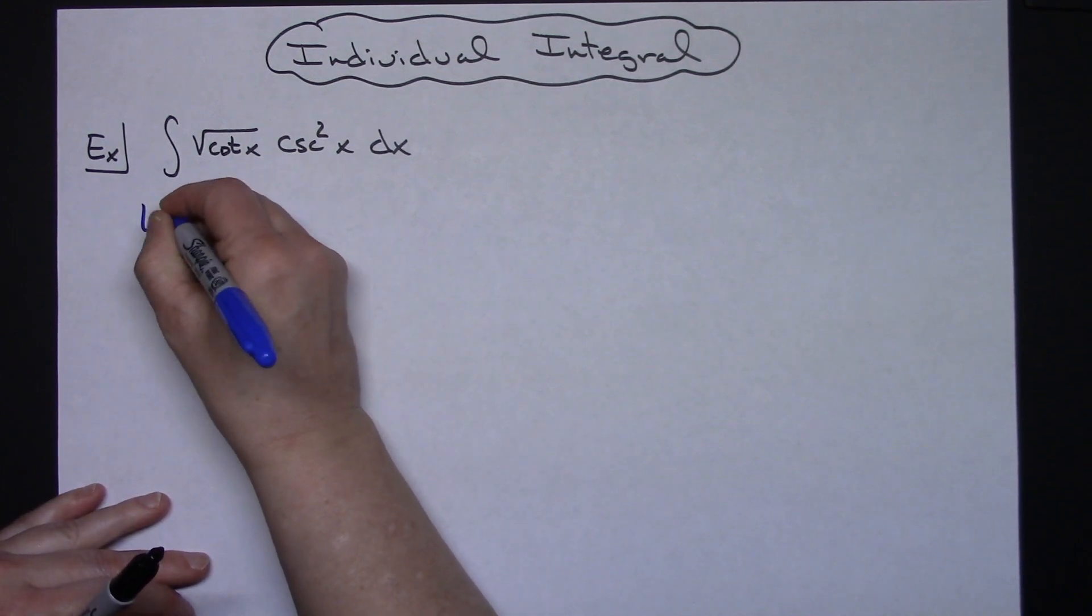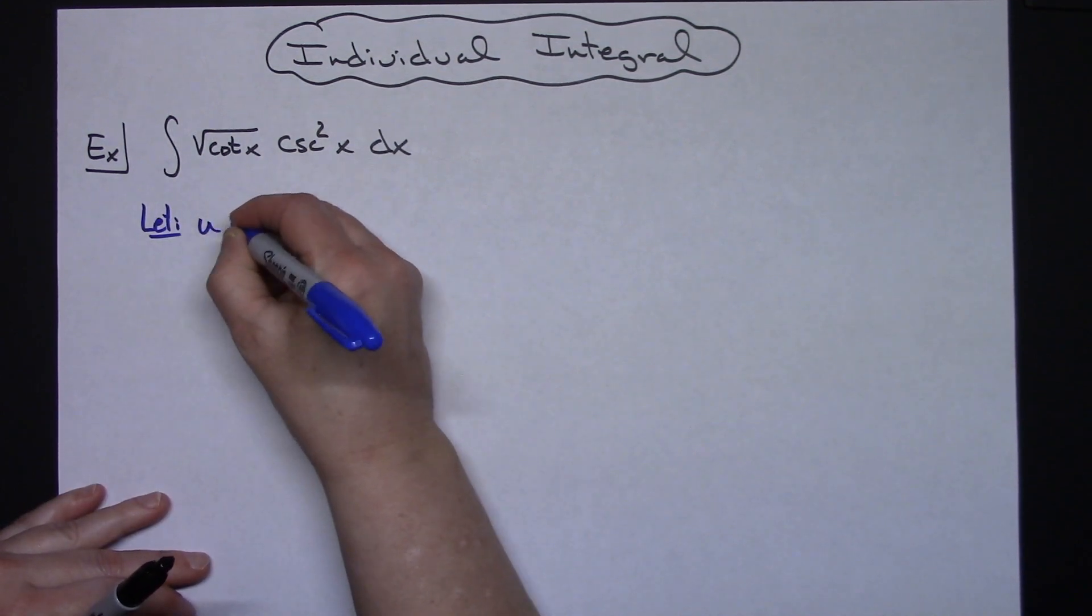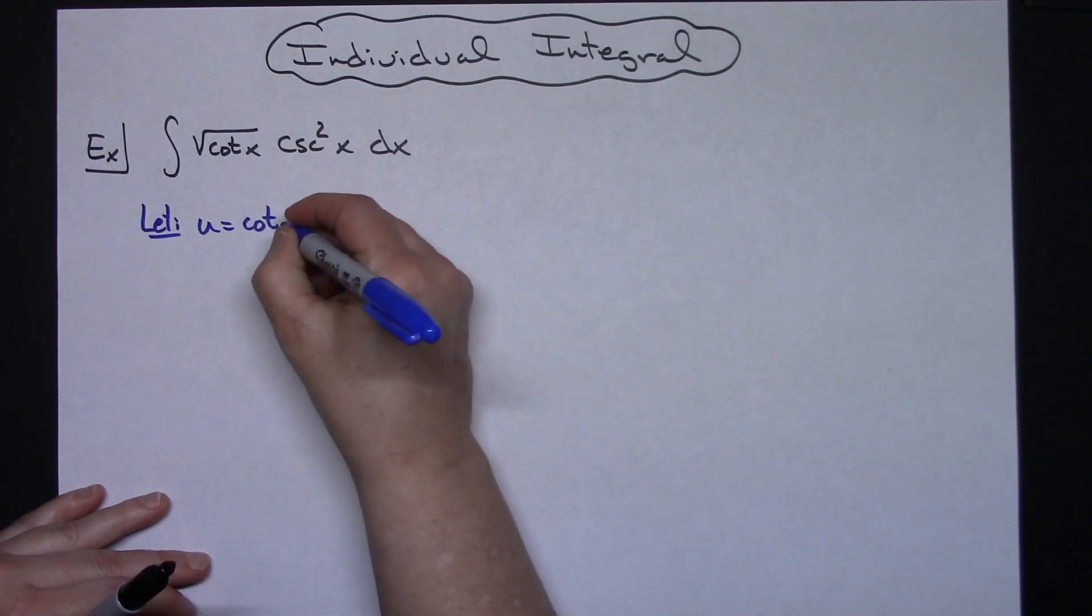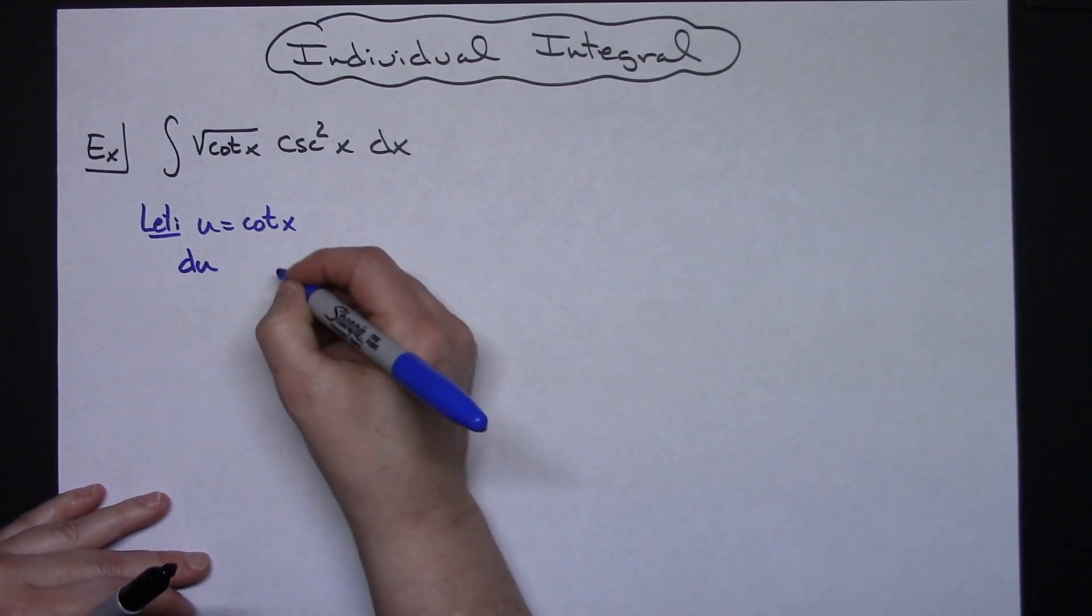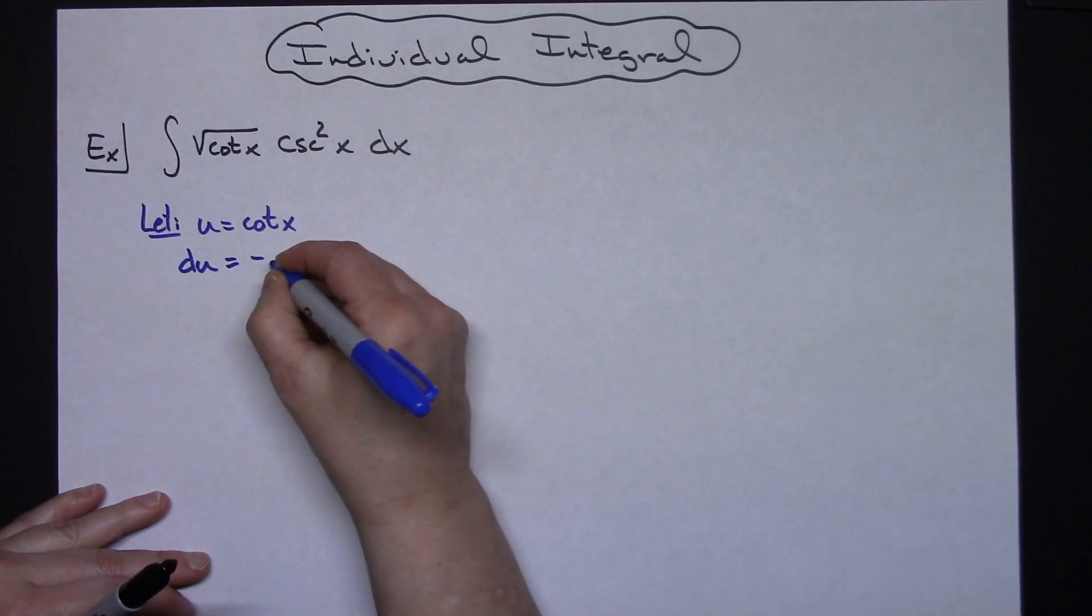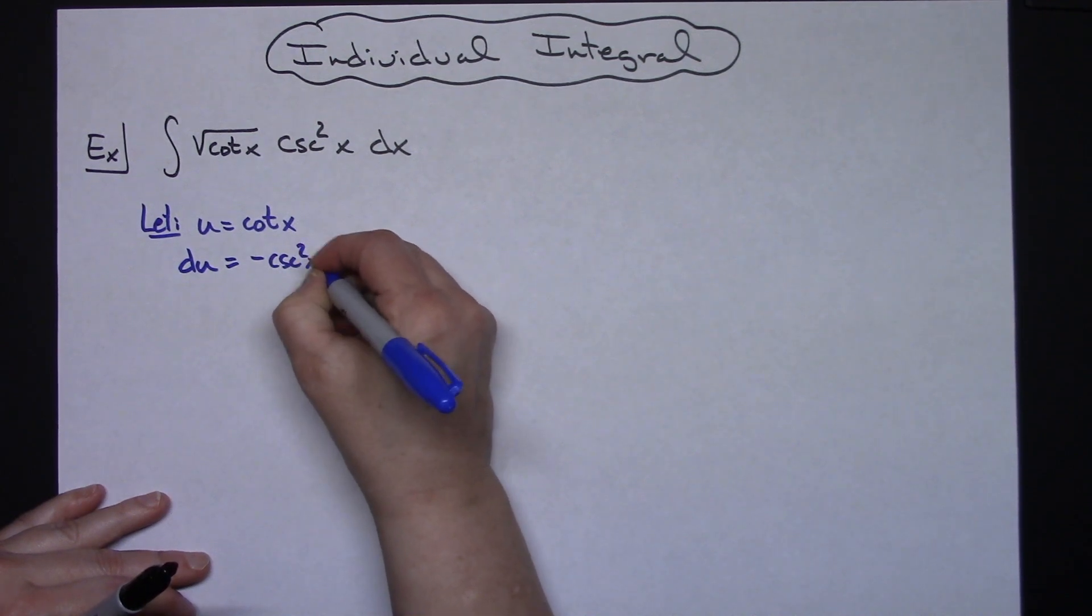So we're going to start by letting u equal that inside function of cotangent x. When I take the derivative of both sides there I'll have du equals a negative cosecant squared x dx.